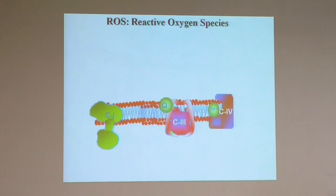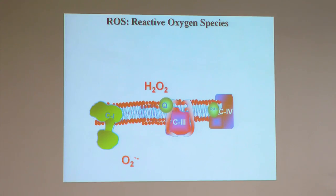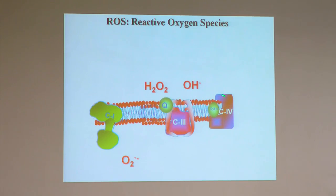However, complex 1, 2, and 3 are not so efficient. They can give one, two, or three electrons to oxygen, producing low-reactivity species like superoxide and H2O2, which cannot cause oxidative damage by themselves — they are not reactive enough to attack proteins, DNA, or lipids. However, in combination with transition metals like iron or copper, they can produce highly reactive species like the hydroxyl radical, which causes most of the oxidative damage.